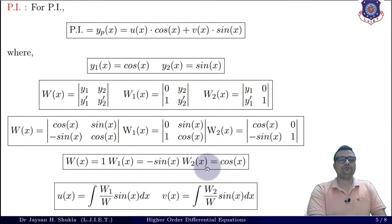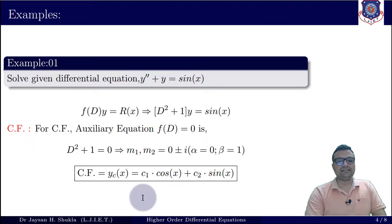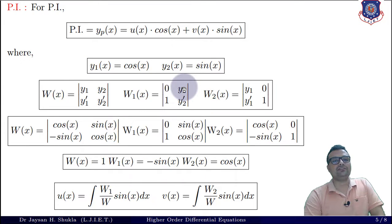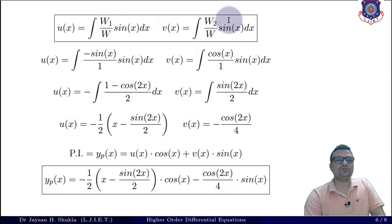Now the formula for u and v is given by u = ∫(W₁/W)·sin(x)dx. Now this sin(x) is the right-hand side function R(x). There is no relation of this sin(x) with y₁ or y₂. u is for y₁, so I am taking component W₁, so it is W₁/W·sin(x). v is the component of y₂, so I am taking W₂/W·sin(x)dx. Now integrating these two will give me the final answer of u and v. Taking values, u₁ is -sin(x), W is 1, times sin(x)dx. Taking value of v, W₂ is cos(x), W is 1, times sin(x)dx.